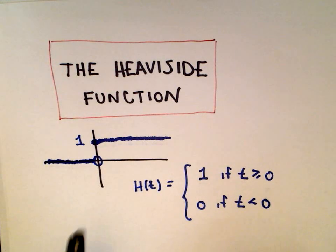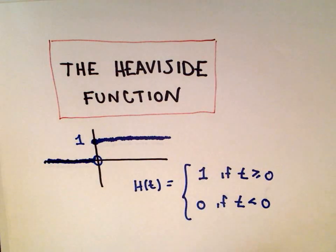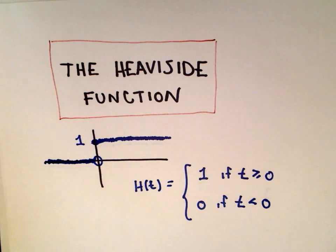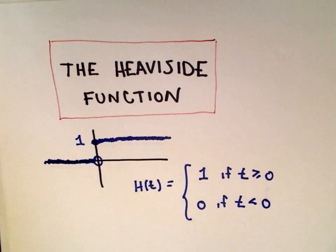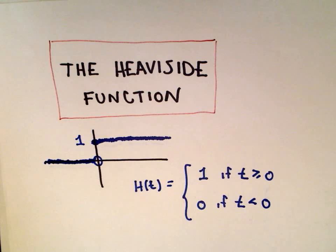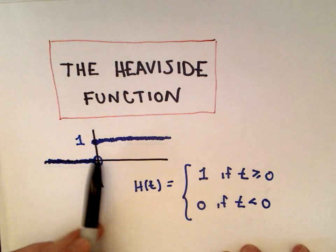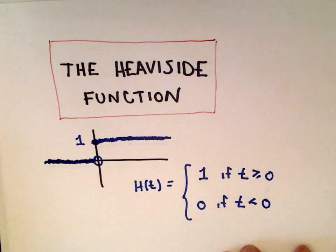All this function is — it's got a fancy name — you can think about it as being a function that sort of turns on and turns off. This would be useful in, for example, a circuit or something modeling electricity. Certainly has other uses than that, but that's the idea. Maybe you can think about a current: it's off, and then it turns on.